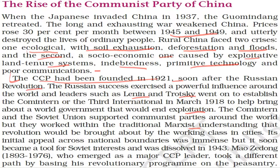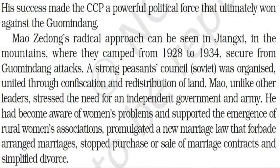Its initial appeal across national boundaries was immense, but the Comintern soon became a tool for Soviet interests and was dissolved in 1943. Mao Zedong, who emerged as a major Communist Party of China leader, took a different path by basing his revolutionary program on the peasantry. His success made the Communist Party of China a powerful political force that ultimately won against the Kuomintang.